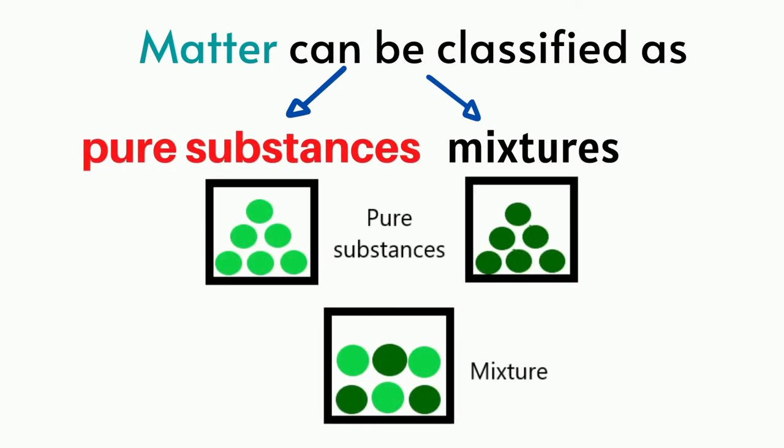In grade 7, you have learned classification of matter. You learned that matter can be classified as pure substances and mixtures.